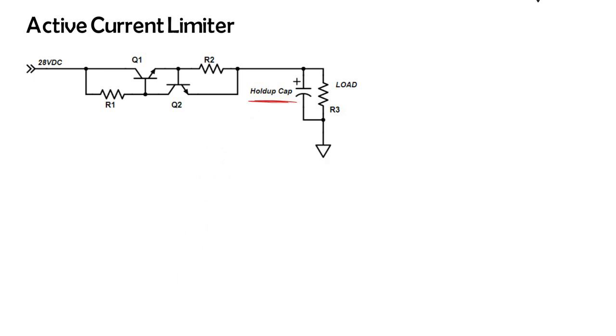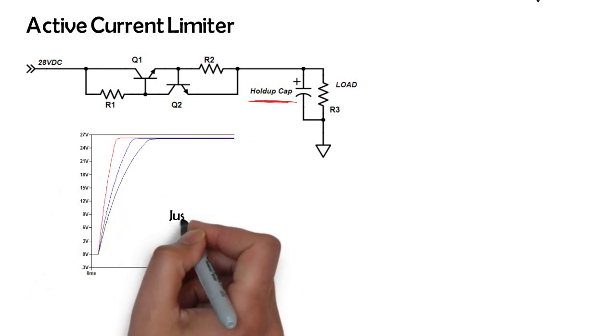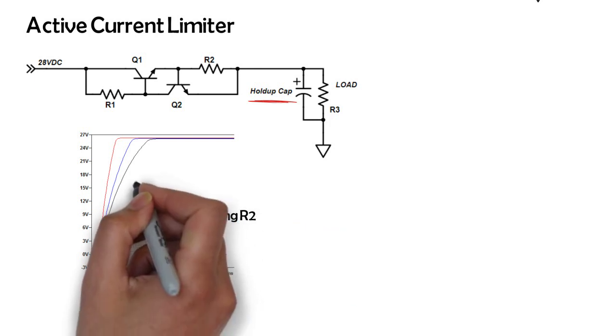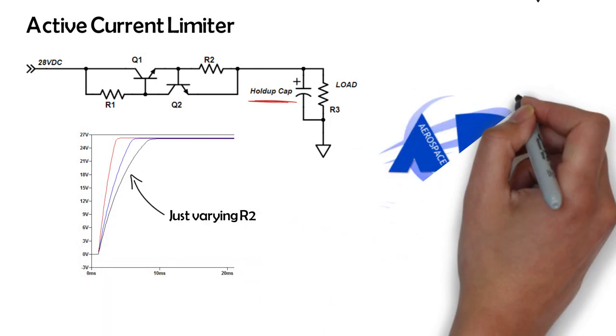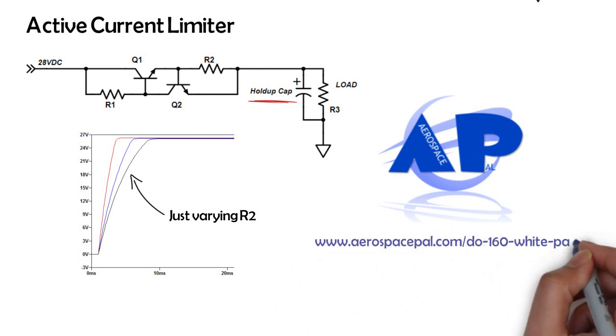Using this circuit and its dynamic resistance, you can charge your holdup capacitance in the set amount of time you choose. Learn how to use this circuit picking specific values for each component at aerospacepal.com. Click the link below to get direct access. Thanks for watching, and I hope you check out Aerospace Pal and use this circuit on future designs.